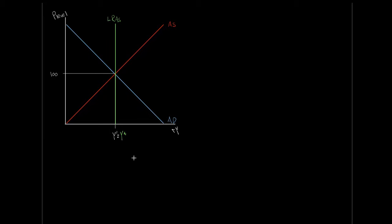At the long-run aggregate supply curve, we have our potential GDP, denoted Y star. Here we are in long-run equilibrium, where actual GDP equals potential GDP. Attached to this is the idea that potential GDP is our output level at full employment — where the only people unemployed are those naturally unemployed due to structural or frictional reasons. When Y prime equals Y star, our unemployment rate equals the natural rate of unemployment.